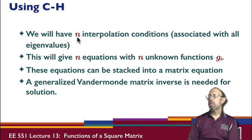When we do this, we will have n interpolation conditions associated with all the eigenvalues, including the repetitions. This will give n equations with n unknowns, and the unknown functions are g_i. These equations can then be stacked into a matrix equation, and a generalized Vandermonde matrix inverse is needed for the solution.